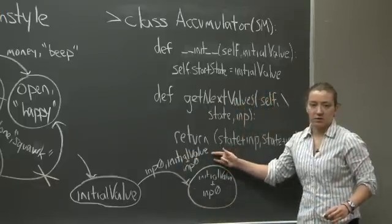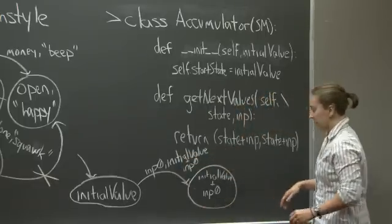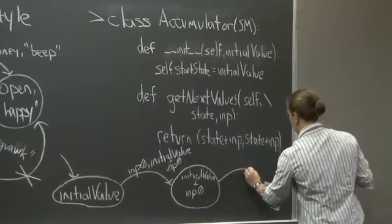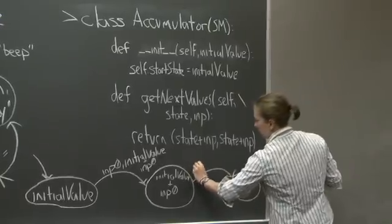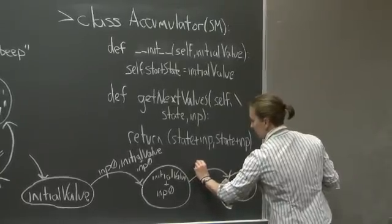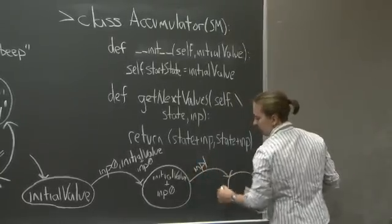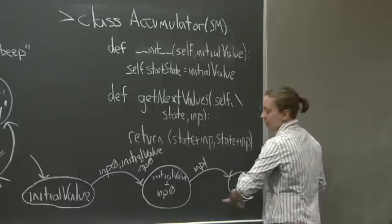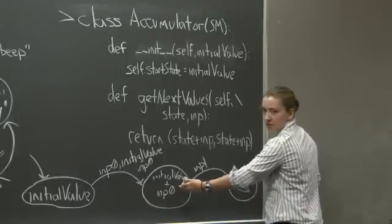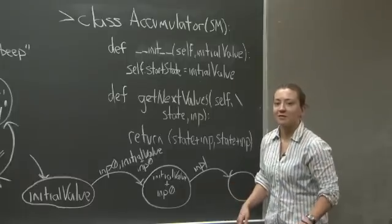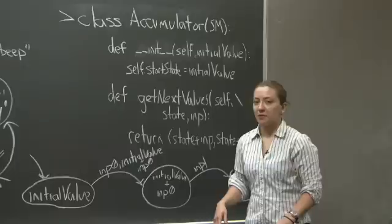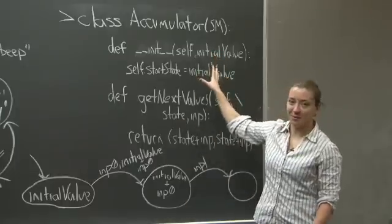Both my output and the new state are going to be the linear combination of these two values. If I made another transition, I would take whatever my next input was and add it to the current state value and return it out as the output, and so on and so forth.